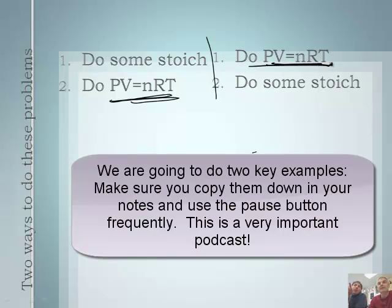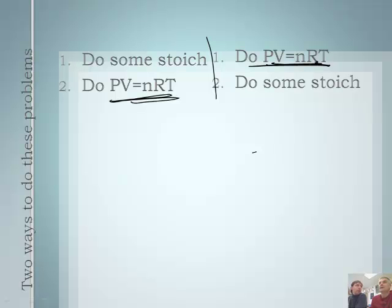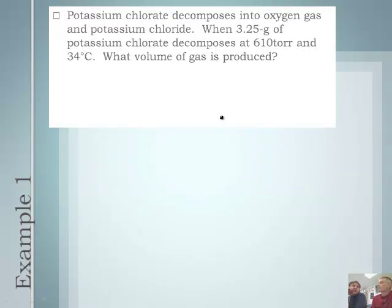If you look at PV equals nRT, what's the one thing that's common to what we've been doing in stoichiometry? That's n, moles. Stoichiometry always boils down to moles. We're going to use the n part of stoichiometry with the ideal gas law for stoichiometry. We're going to do a couple of examples.